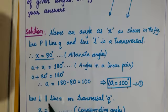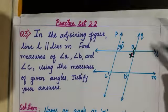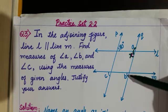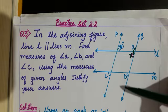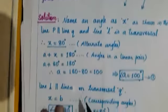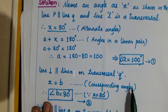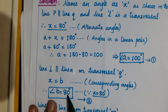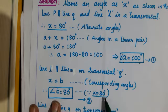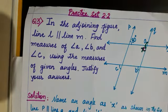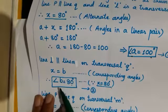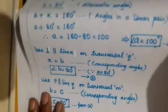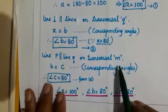Now to find angle b: line l is parallel to line m on transversal q. Angle x and angle b are corresponding angles, so they are equal. Since x equals 80°, angle b equals 80°.